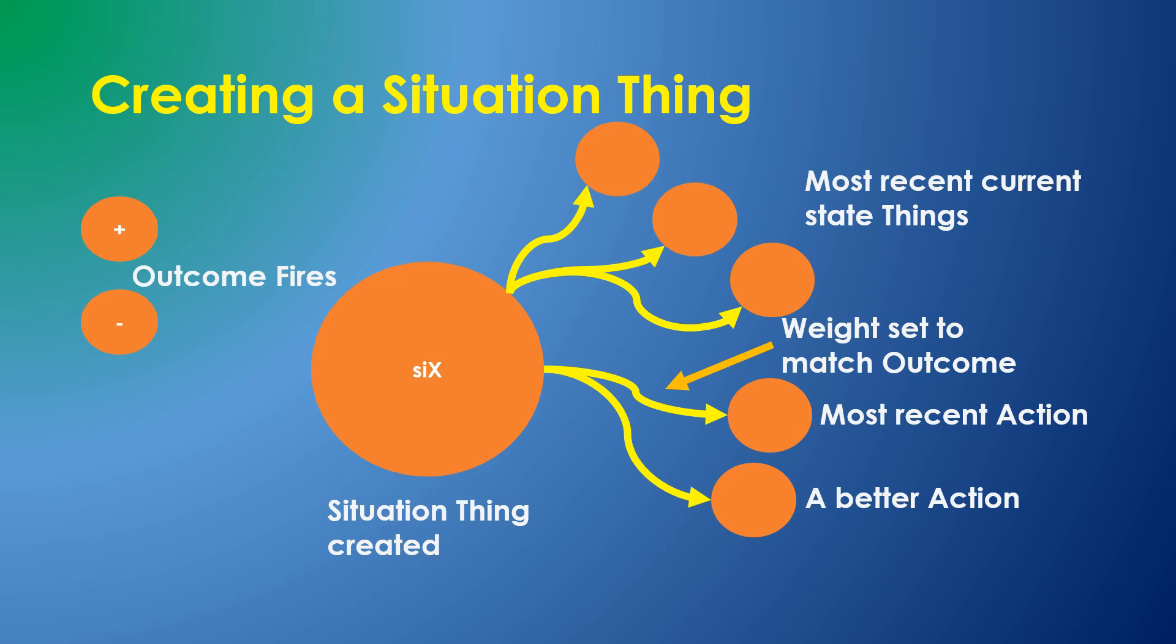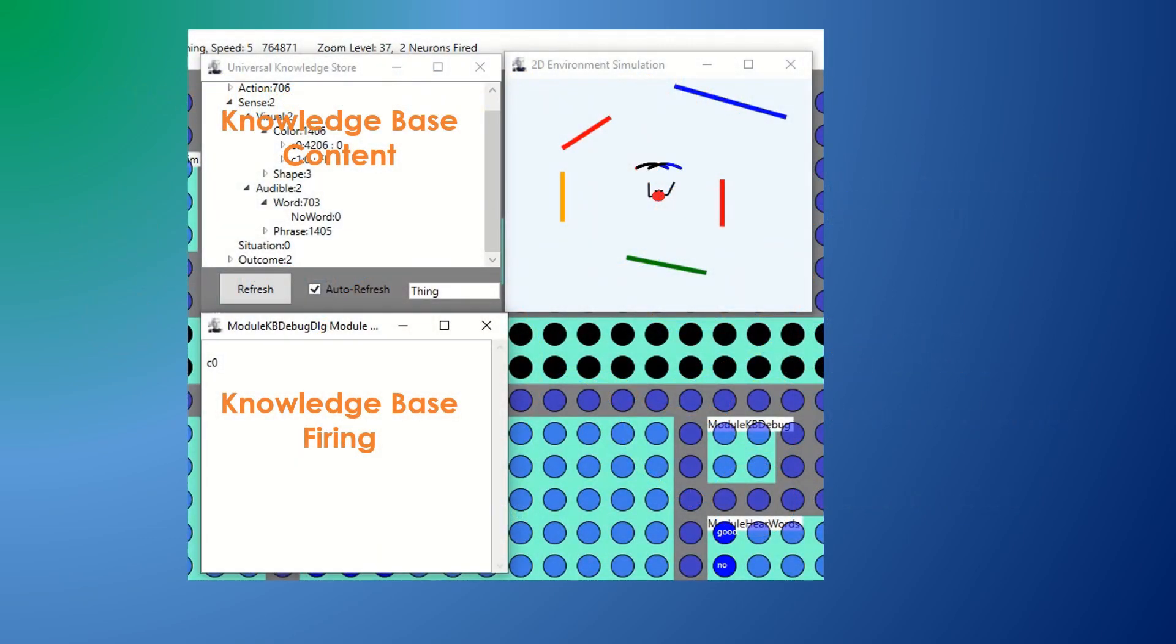In development of the software for the situation thing, I quickly found that I needed a new display type which would show the operation of the knowledge store over time. This display shows which things are firing for each cycle or time period in a single line of text. It doesn't show lines if there was no change in the knowledge store state.